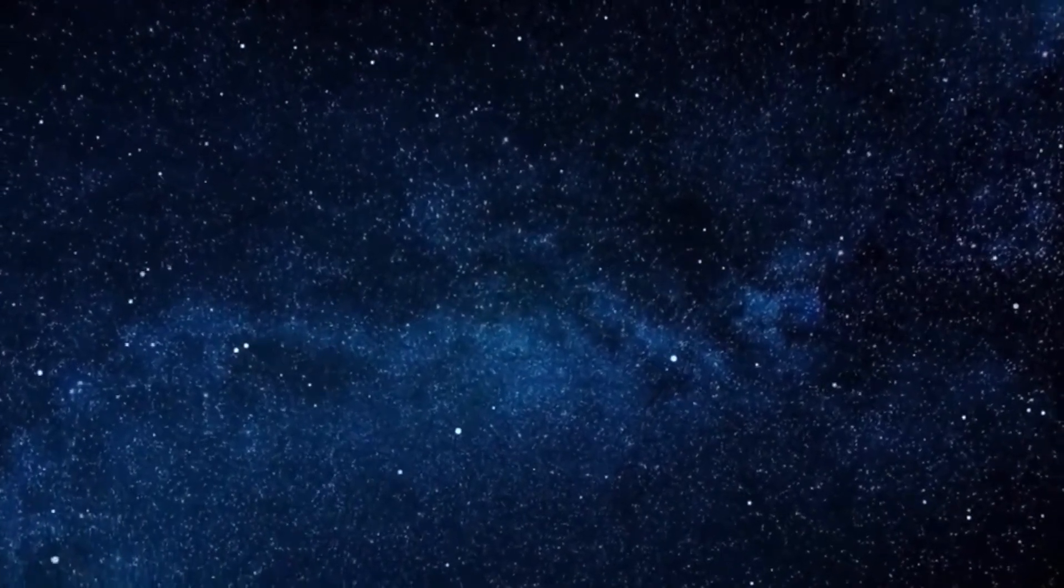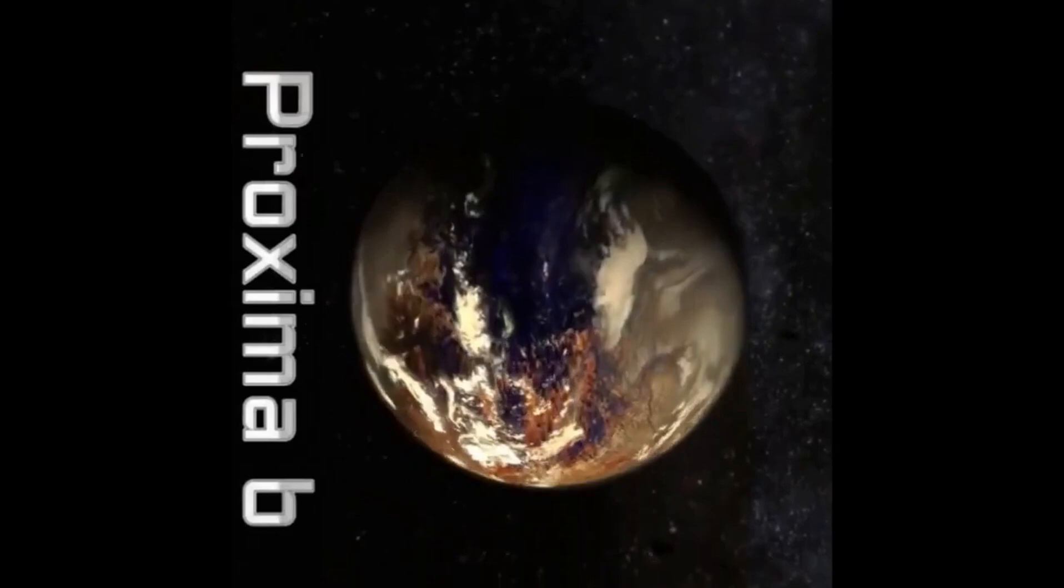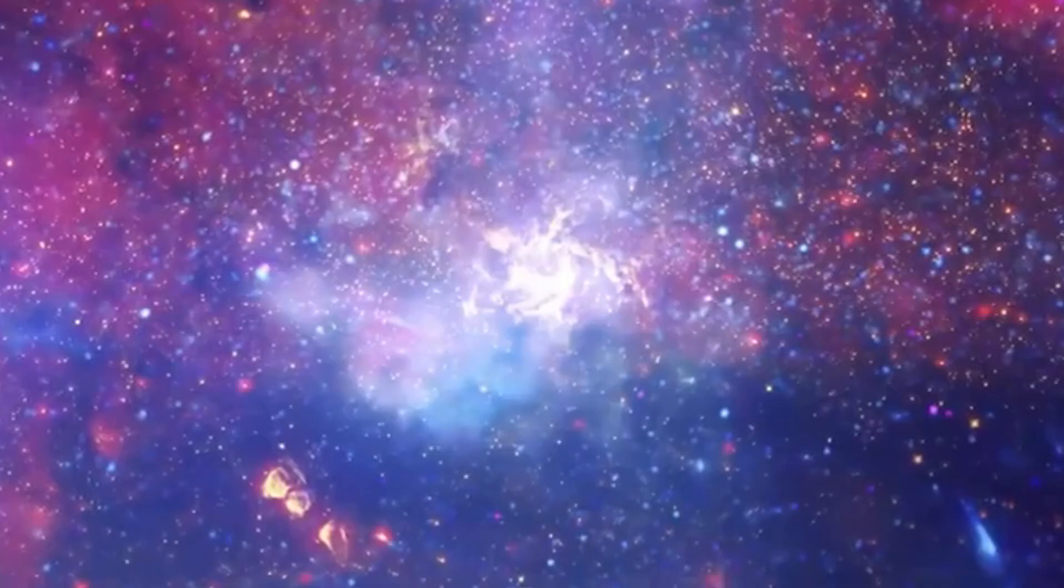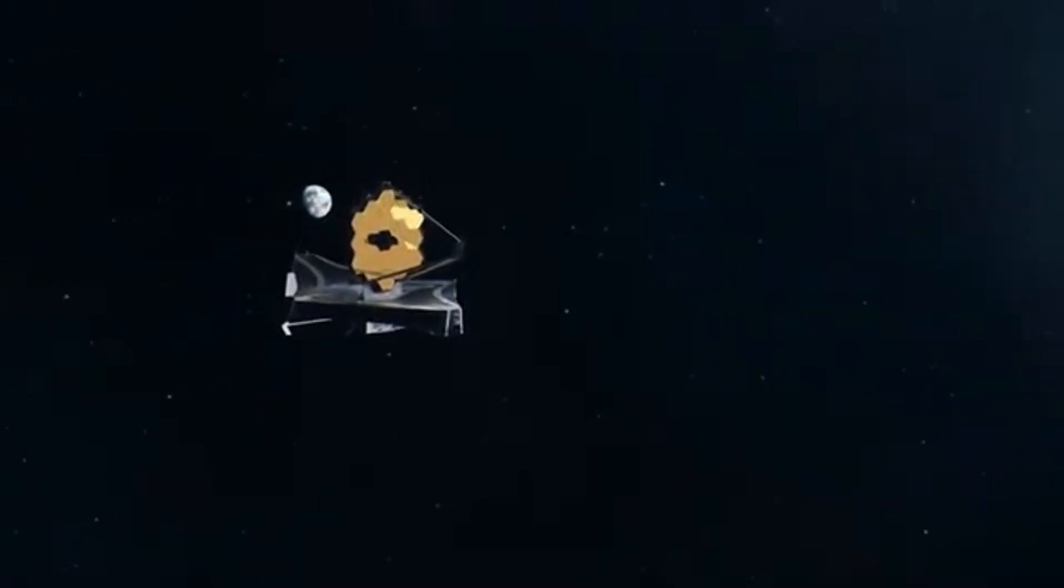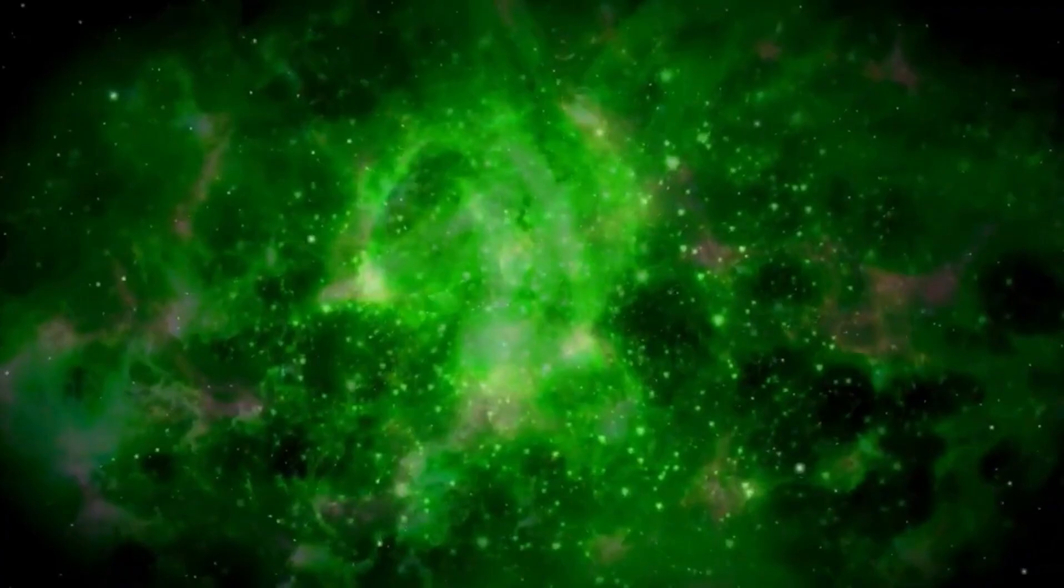The James Webb Telescope recently unveiled the clearest image of Proxima b ever captured, a celestial body just 25 light-years from Earth. This discovery has sparked global interest among astronomers, fascinated by its unique characteristics as one of the closest exoplanets ever found.